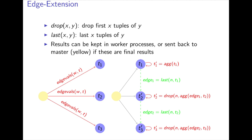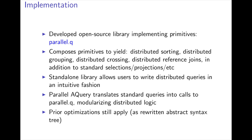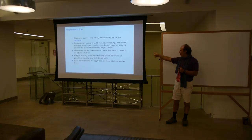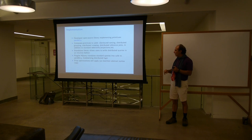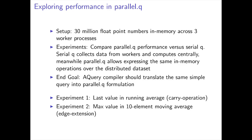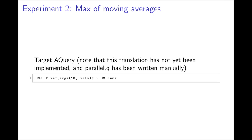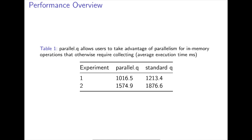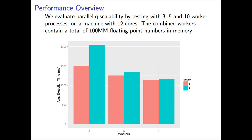Jose developed parallel.q, which could have its own independent interest especially once the performance bugs are fixed. Parallel.q does distributed sorting, distributed grouping, all of these things — and it also includes all the prior optimizations done for the sequential system, like only sorting the columns you need. We did a few queries like the last value in a running average, the max value in a 10-element moving average. I would love to say we got an amazing speedup. We got some speedup over standard Q, but we're just using peach. And we get some speedup in parallelization, but it's not really great yet. So that's where we are right now.